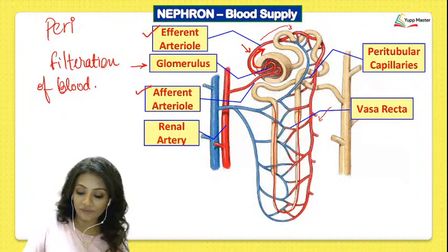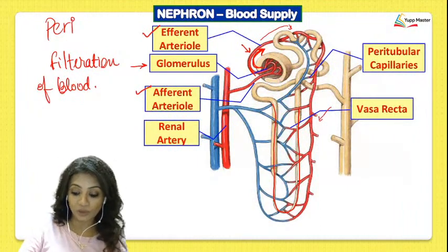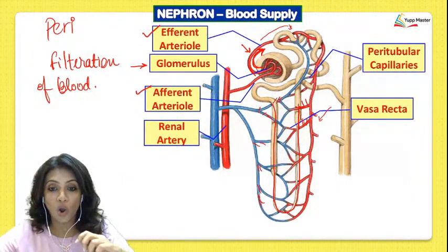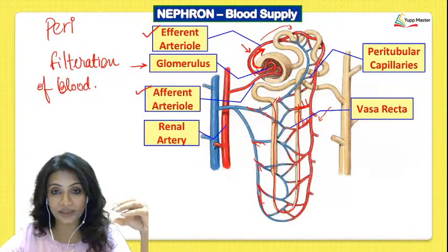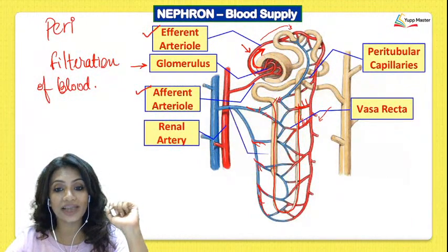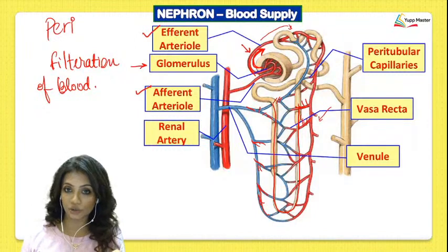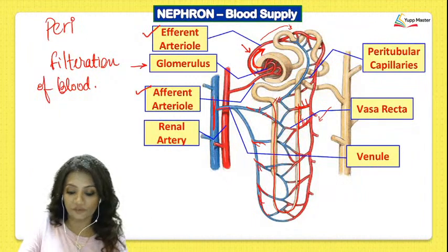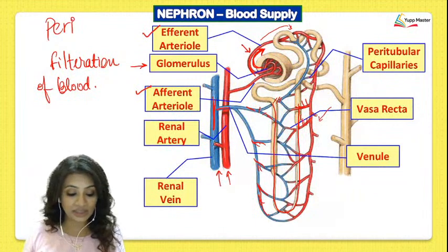At the level of the Vasa recta, exchange of materials takes place — oxygenated blood is supplied and deoxygenated blood is taken in. Those deoxygenated blood-carrying capillaries unite to form venules. Venules unite to form a blood vessel called the renal vein, just as the incoming vessel was the renal artery.